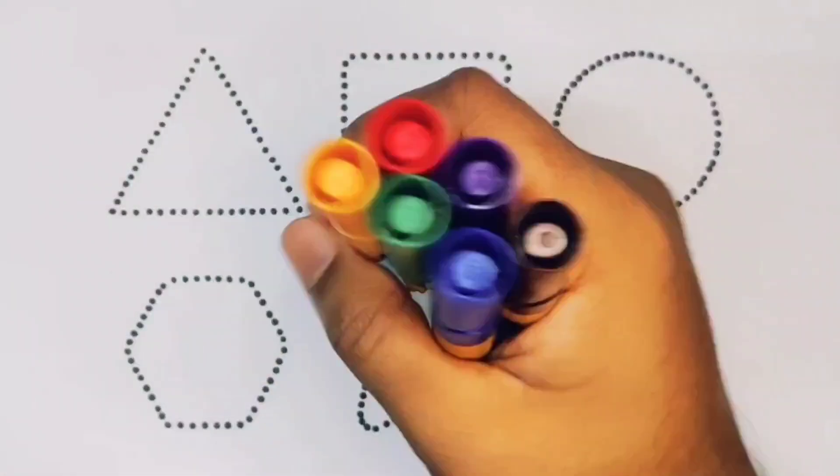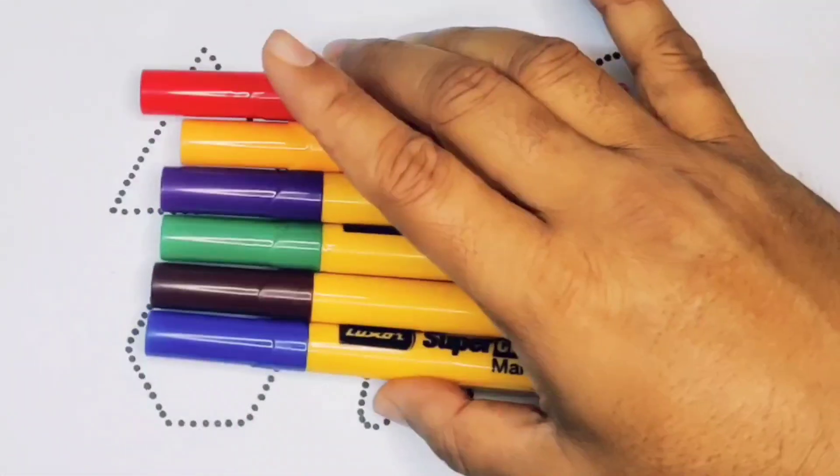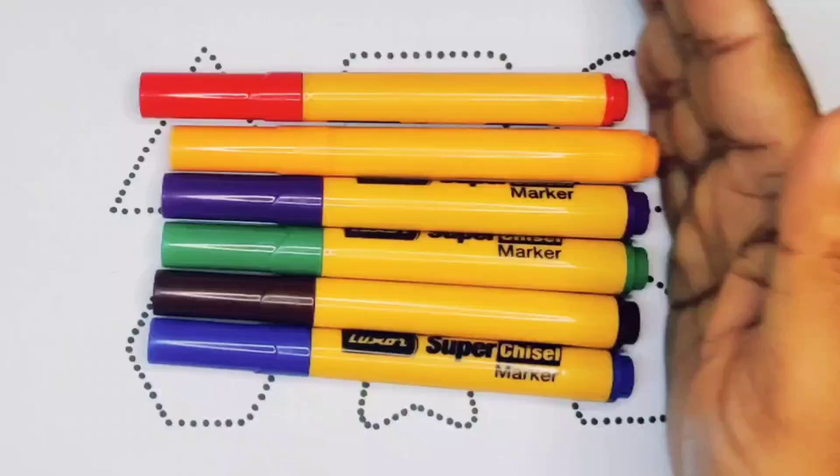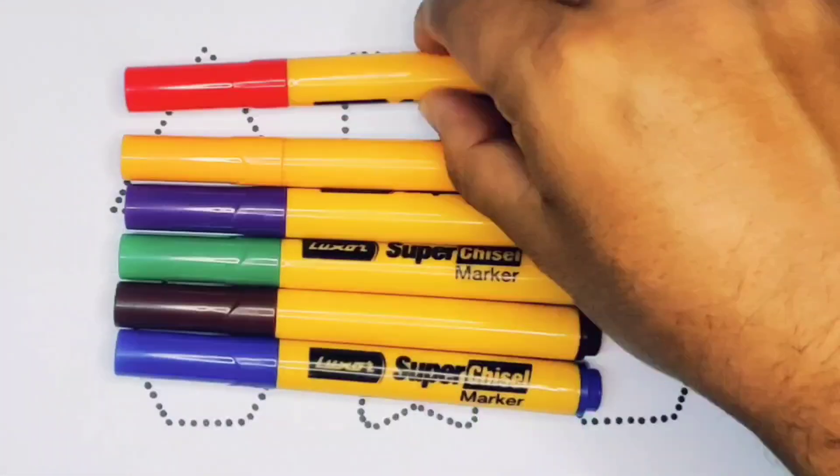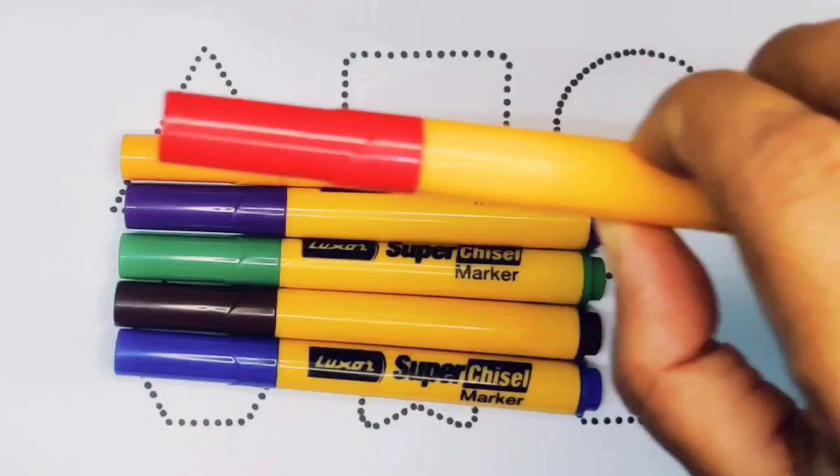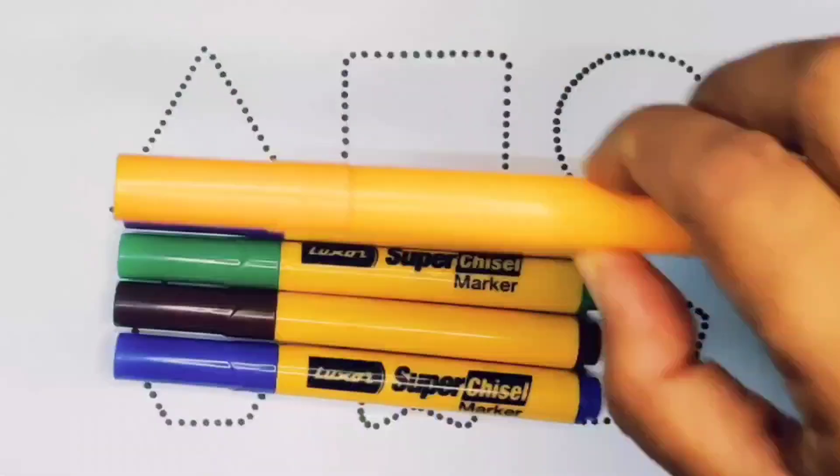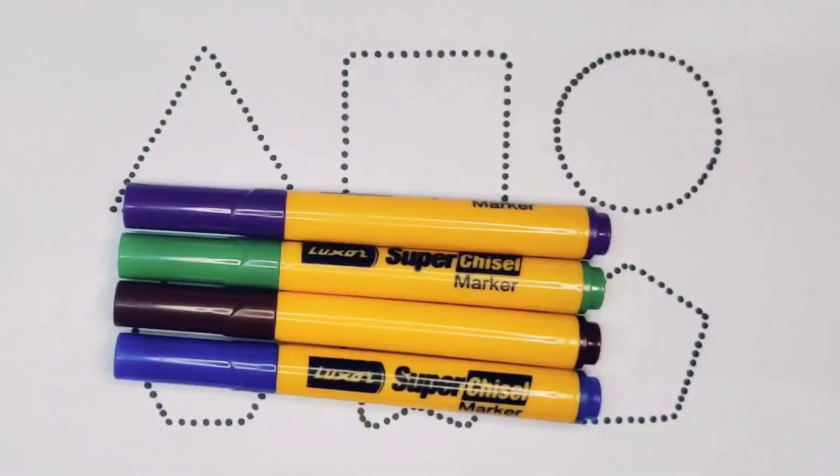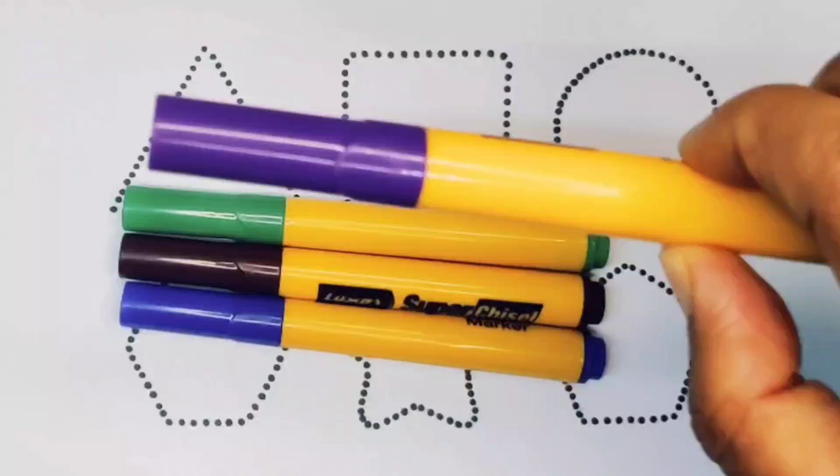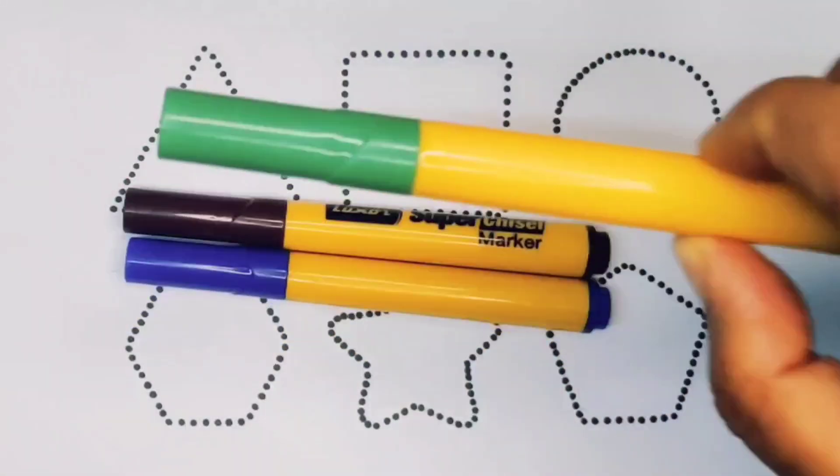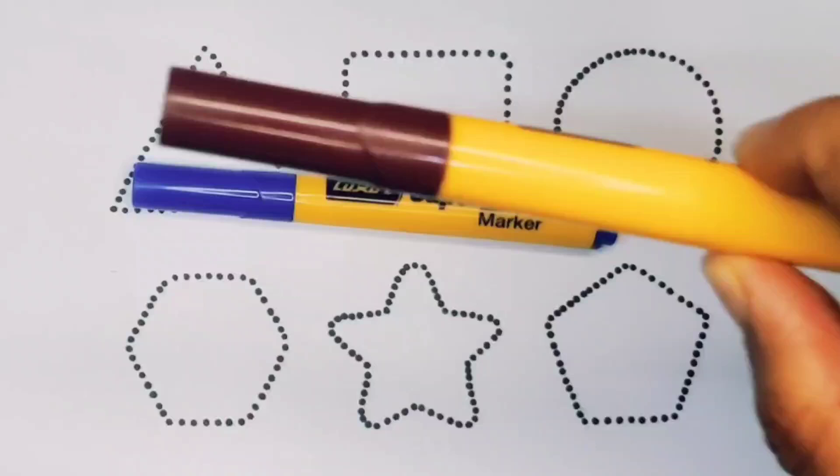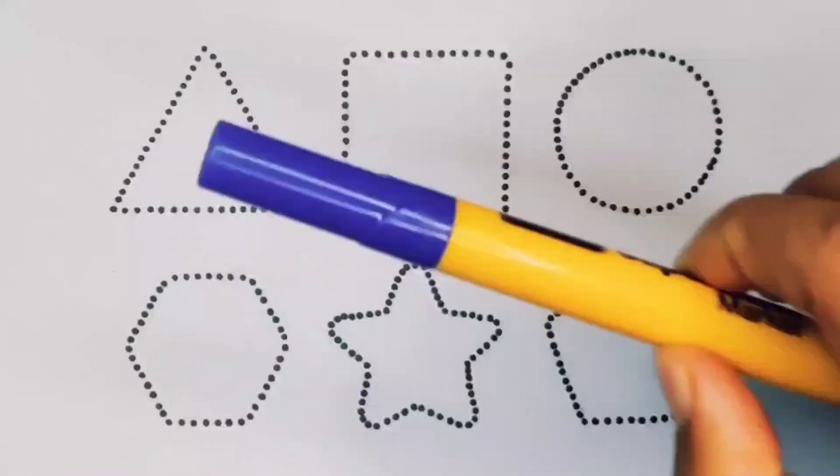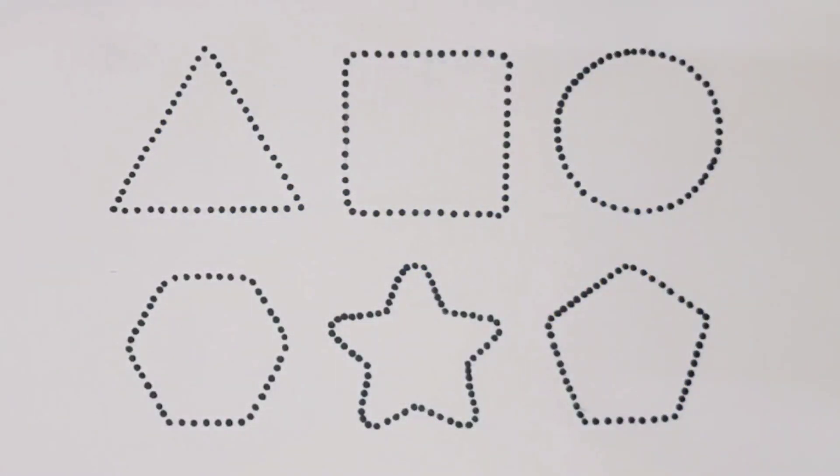Hello kids, welcome to my new video. First we're going to learn the color names: red color, orange color, purple color, green color, chocolate color, blue color, and black color.